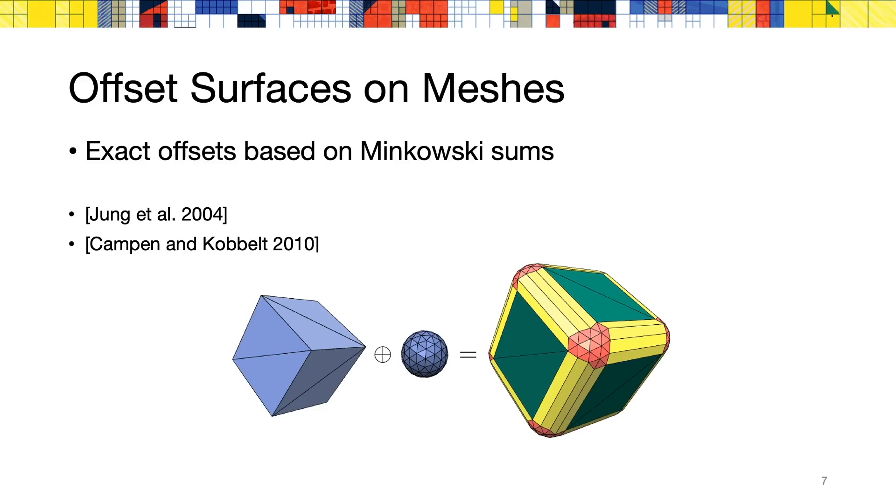Existing methods for computing surface offsets fall in essentially two categories. The first category operates on a triangle mesh and seeks to compute the Minkowski sum of an input surface with a spherical kernel. These methods rely on exact arithmetic in order to be robust. While they can be expensive, this method also provides the most accurate results.